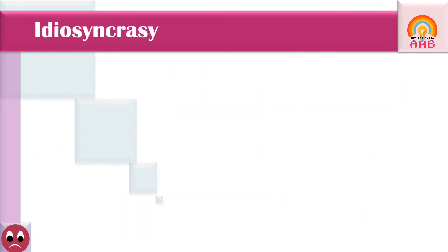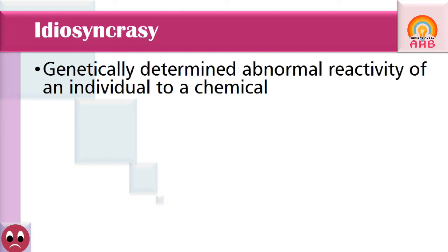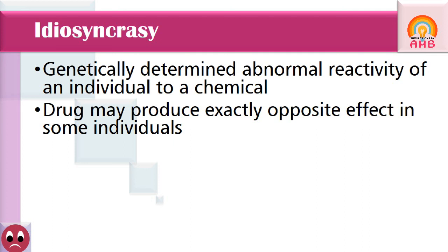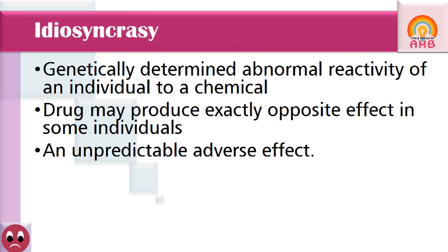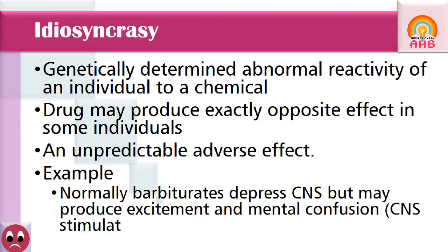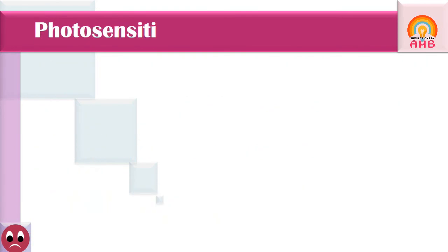Idiosyncrasy is a genetically determined abnormal reactivity of an individual towards a chemical. A drug may produce exactly the opposite effect of its normal pharmacological action in some individuals. It depends upon the individual's genetic makeup and hence is an unpredictable adverse effect. For example, normally barbiturates depress the CNS, but in some individuals they may produce excitement and mental confusion, that is CNS stimulation — which is the opposite of the expected effect.